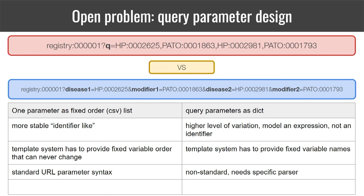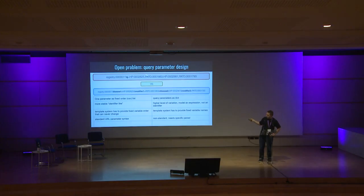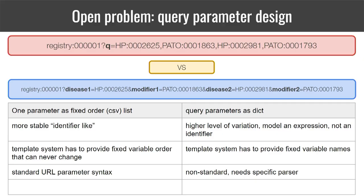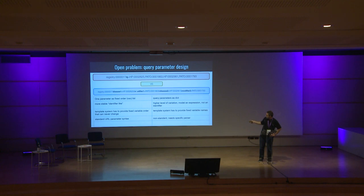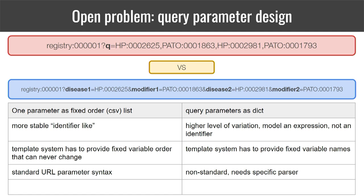There are some open problems. Right now, even within the development team, there's a bit of disagreement about how exactly this expression should be represented — one group prefers something more terse, and another group would like to have all the slots of the model represented explicitly: disease one, modifier one, disease two, modifier two. We should probably discuss this later in a more focused setting.